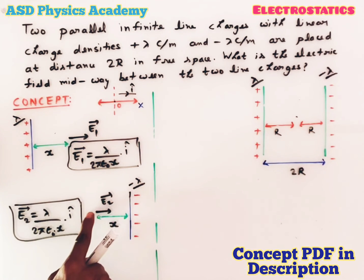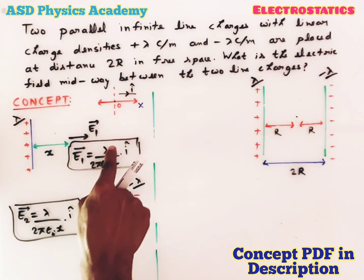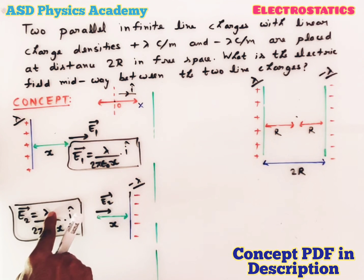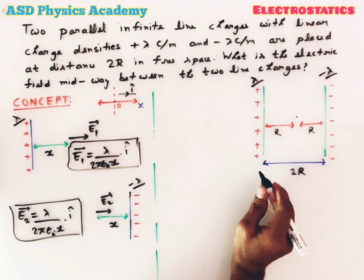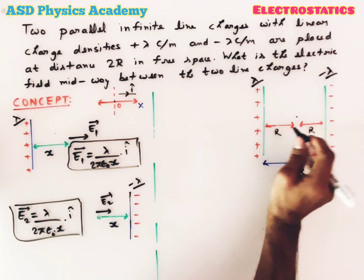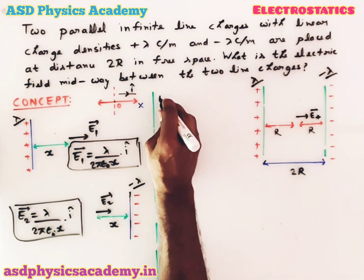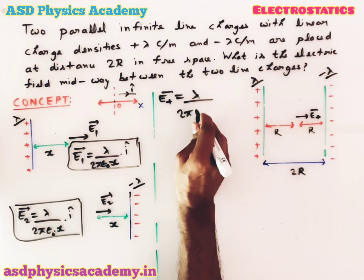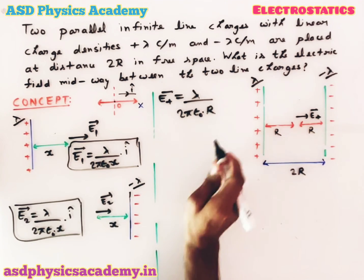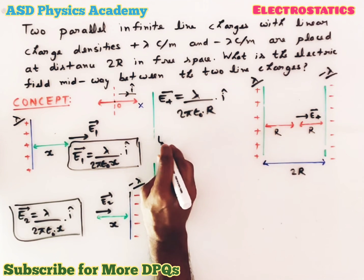One most important thing to remember: when drawing the direction of the electric field, we use only the magnitude of the linear charge densities. So here I use lambda, and here also I use lambda. Now in our question, due to the positive line charge, the electric field at a distance r will be away — this is E-plus, and its value is lambda by 2 pi epsilon-naught r, multiplied by i-cap.